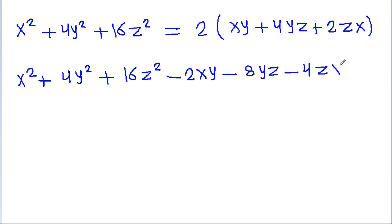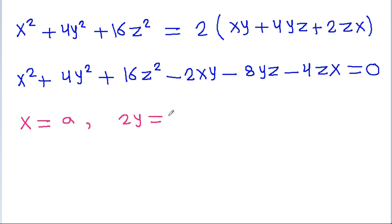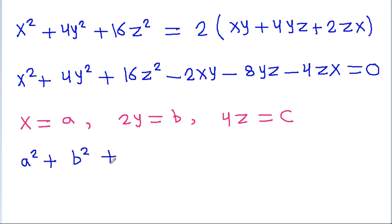Now if we let a = x, b = 2y, and c = 4g, then a² = x², b² = 4y², c² = 16g², and 2ab = 2xy. The expression becomes a² + b² + c² − 2ab − 2bc − 2ca = 0.